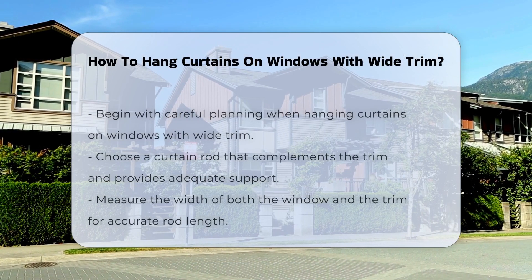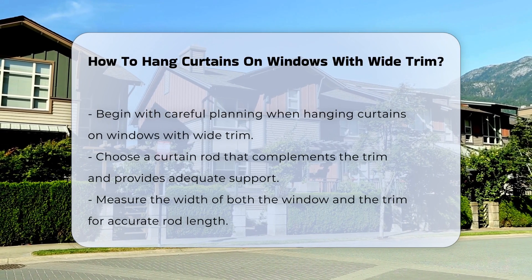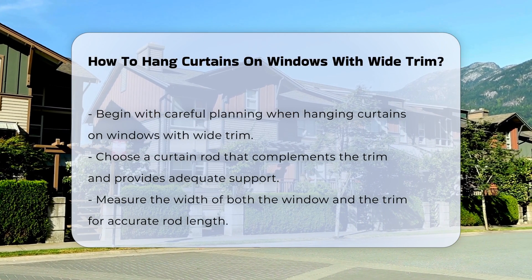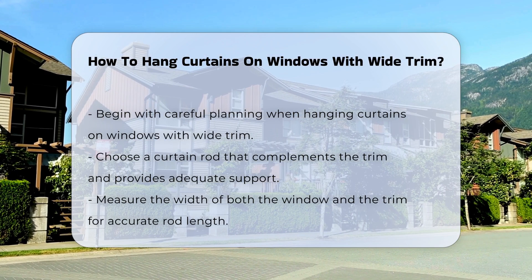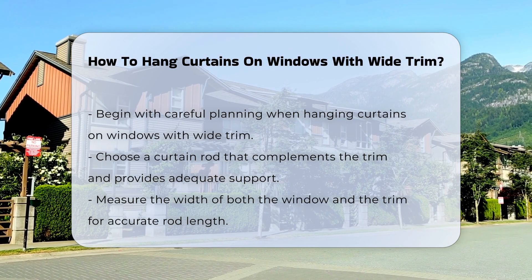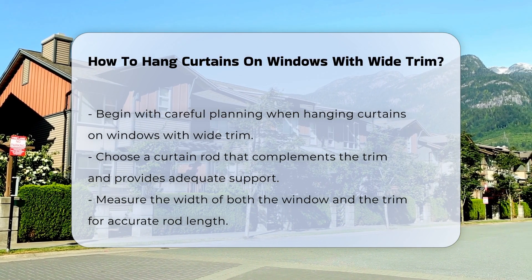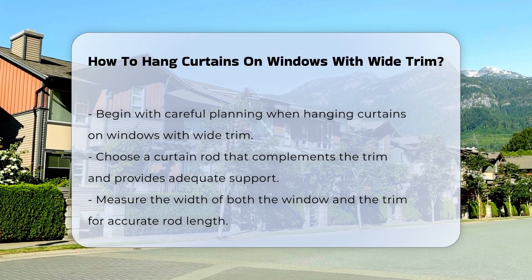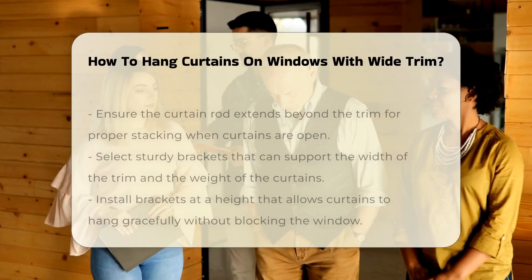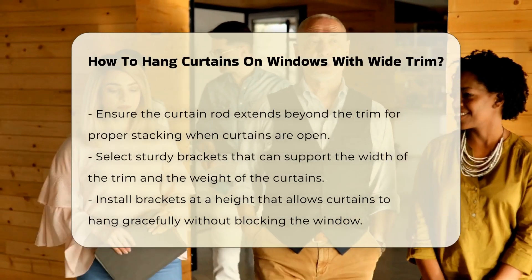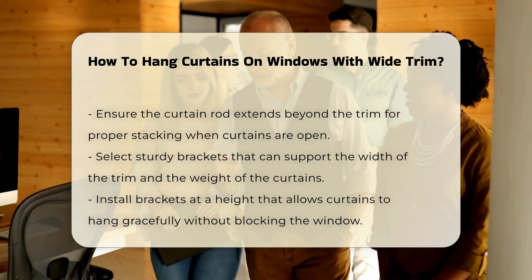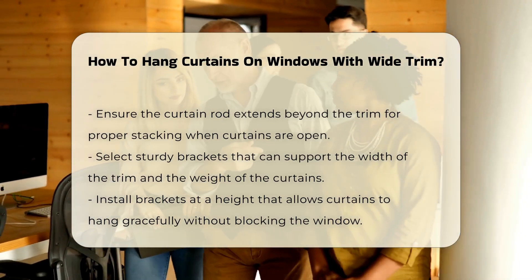Hanging curtains on windows with wide trim requires careful planning. First, consider the type of curtain rod you will use. The rod should complement the trim while providing adequate support. Next, measure the width of the window and the trim. This will help you determine the ideal length for the curtain rod. Ensure the rod extends beyond the trim to allow for proper curtain stacking when open.